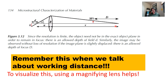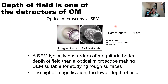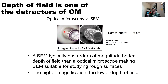Depth of field is one of the detractors of optical microscopy. Looking through an optical microscope at a screw, you can get a nice image of the top of the screw but you lose everything else - the depth of field is very poor. SEM has a much greater depth of field, which is one reason to use SEM even at lower magnification. There are optical systems that take images at different focal planes and stack them for greater depth of field, though that's more labor intensive.